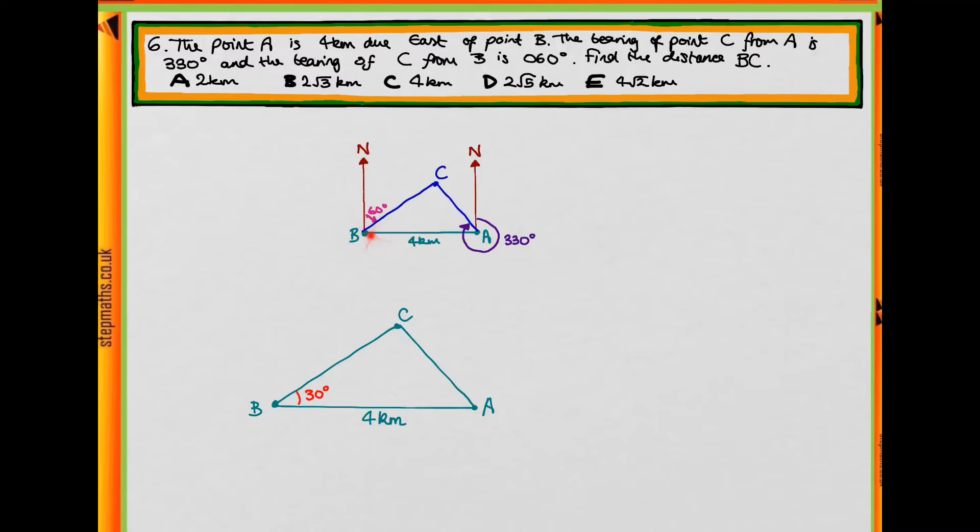So we have A is due east of B, so this line is completely horizontal and the north is completely vertical. And so they're going to form a right angle here and here. And we know that this is 60 degrees. So the angle inside at B must make up the other 30 degrees so that we have 90 altogether. So this must be 30 degrees.